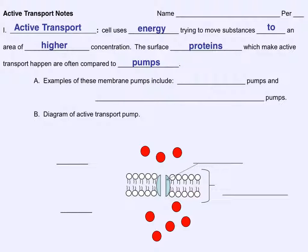Okay, remember that active means exactly the opposite of passive. In this case, in active transport, cells use energy trying to move substances to an area of higher concentration against the concentration gradient. The surface proteins which make active transport happen are often compared to pumps. Think about the energy you'd have to expend to pump water out of a well. Examples of these membrane pumps include a proton pump and also sodium potassium pumps. In either situation, energy is being used to move molecules against the concentration gradient.